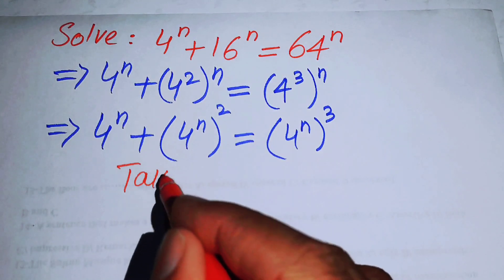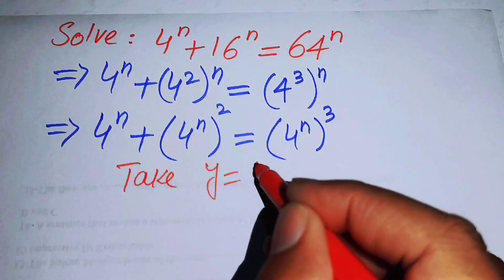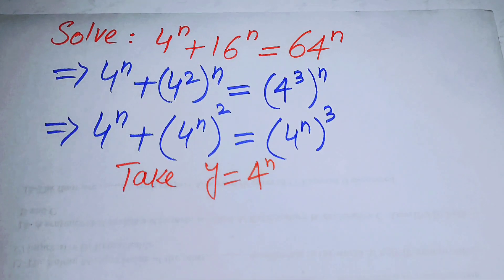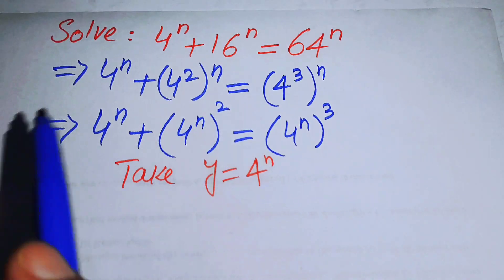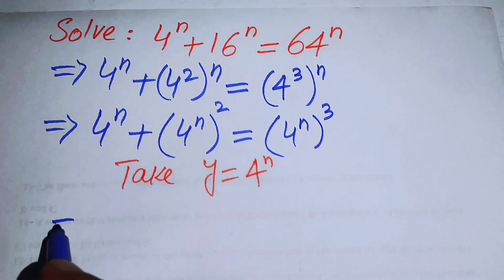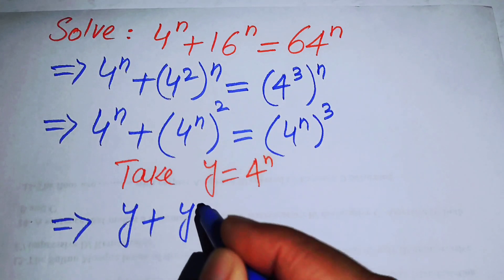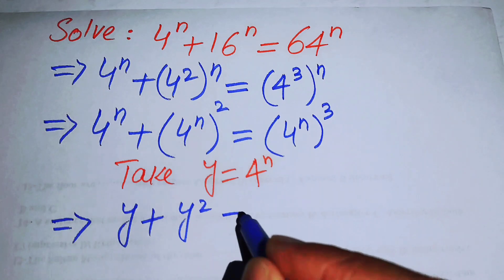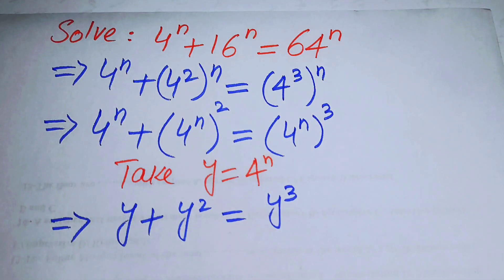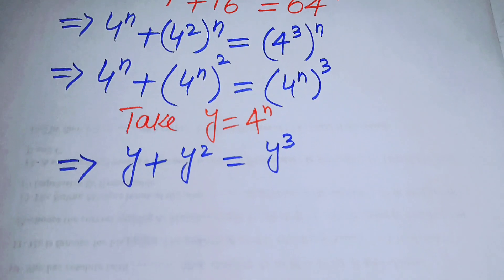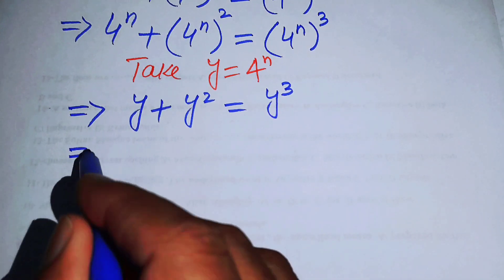Now we will convert this exponential equation into cubic form. We let y equal 4 to the power of n. Substituting y into the equation, it becomes y plus y squared equals y cubed.